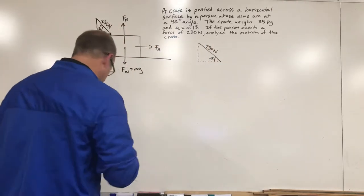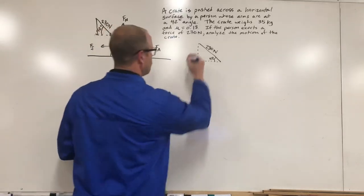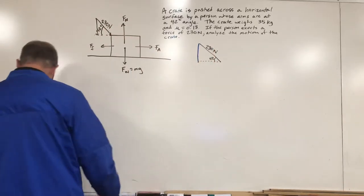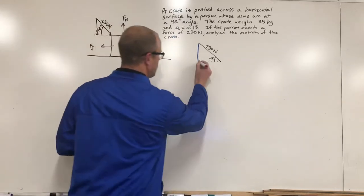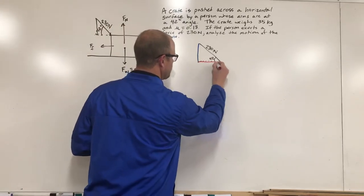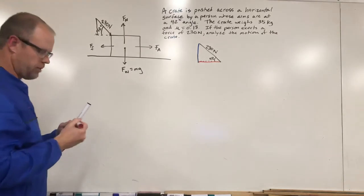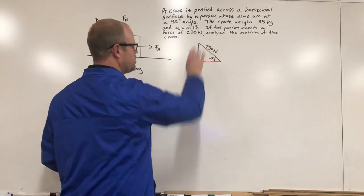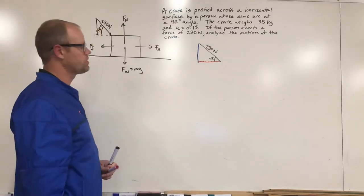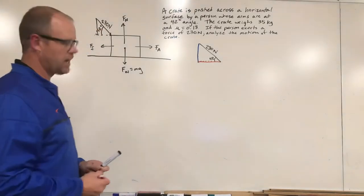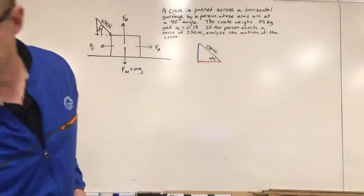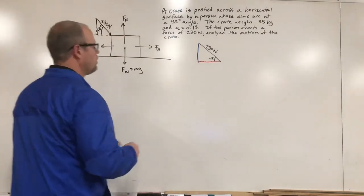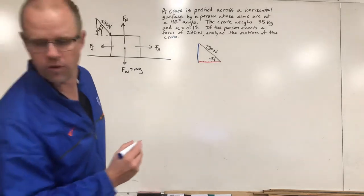We need to really find the vertical component and the horizontal component. Once we find those components, we'll be treating them independently. We won't really use the 230 anymore. So if I were to do my trig, this right here would be 230 times the sine. The blue one's going to be the opposite side, times the sine of 42. And I did this ahead of time and I found out that that blue one would equal 154 newtons.